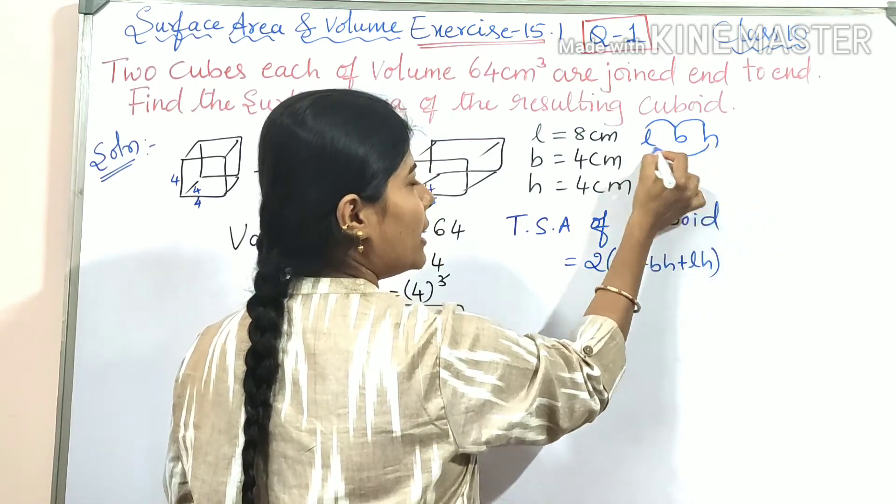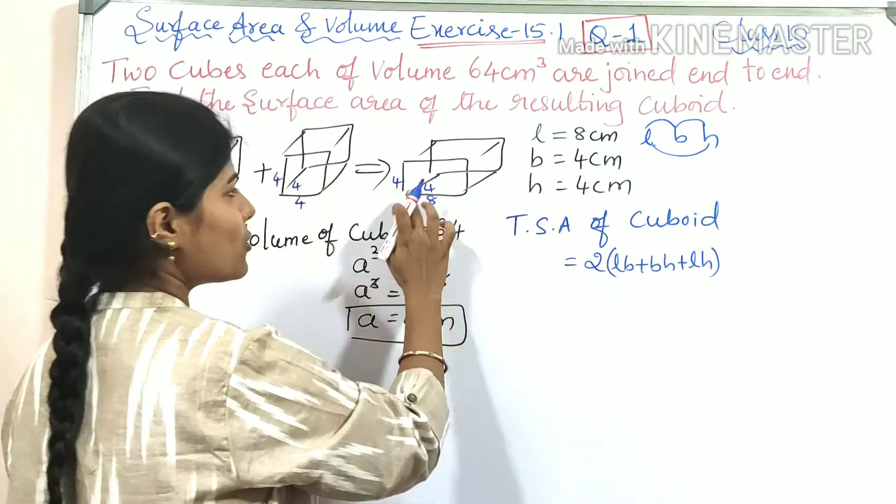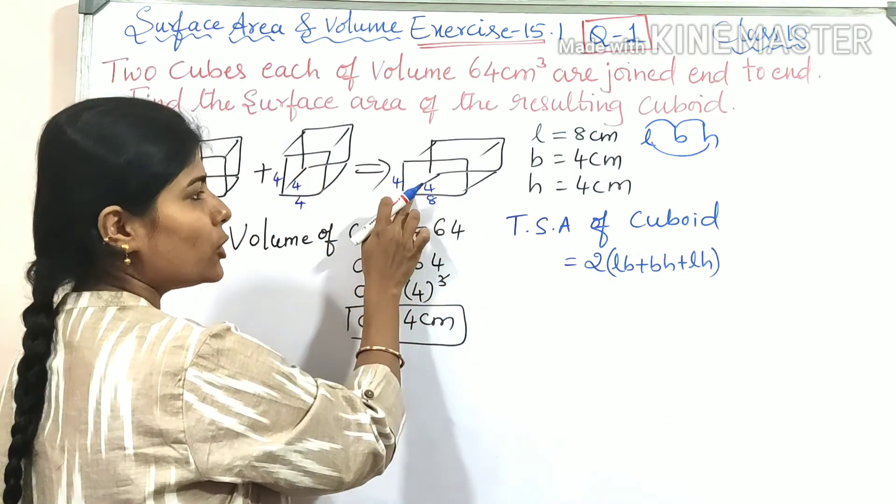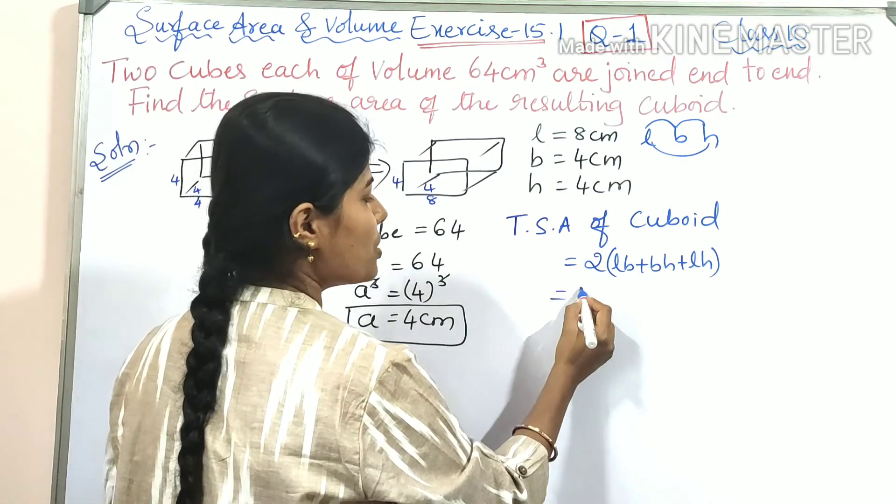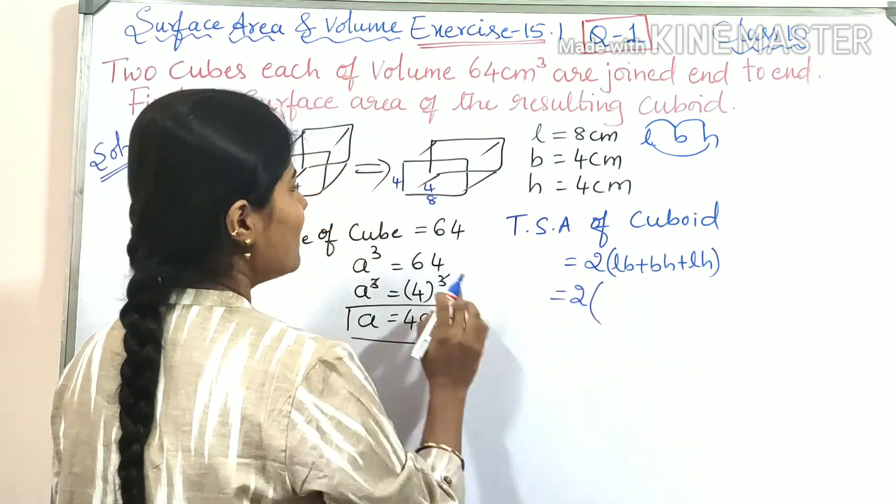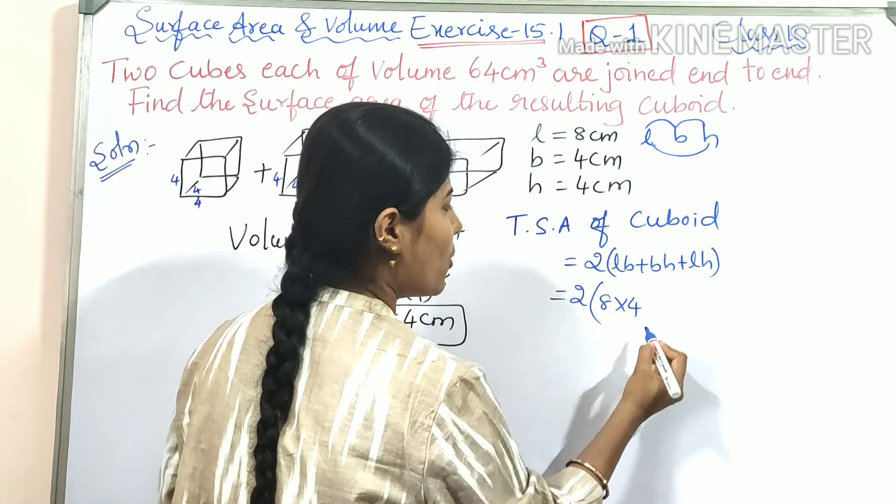Now let us substitute the values: 2 times, where l is 8, b is 4, h is 4, so 2(8×4 + 4×4 + 8×4).